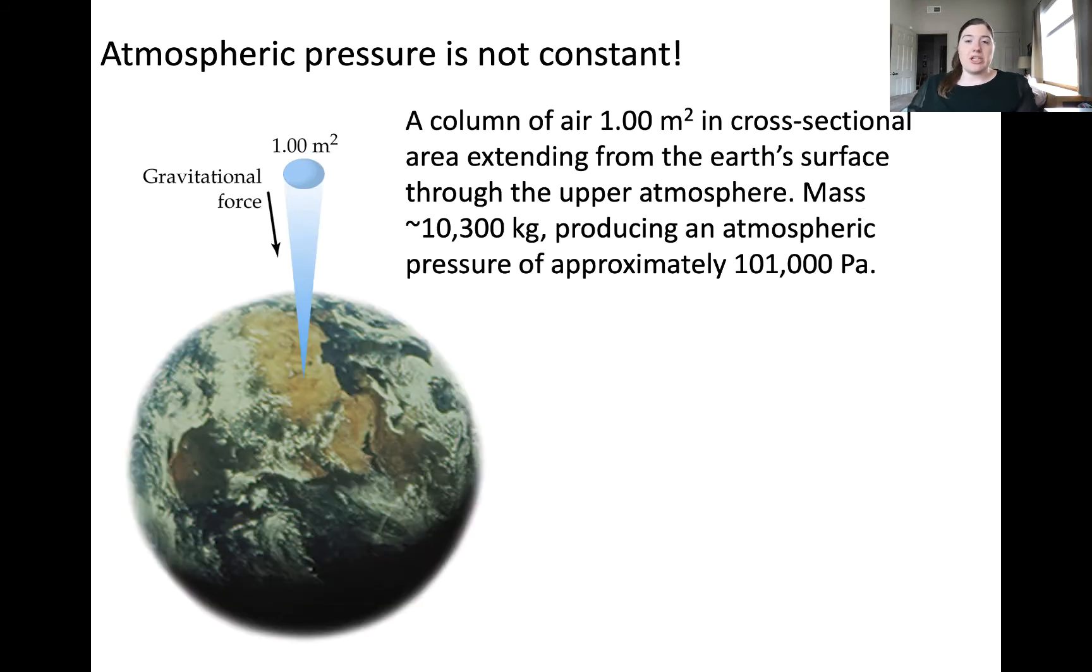One of the units of pressure we'll use in this class is referred to as the atmosphere, ATM. The origin of this unit comes from measuring the mass of a column of air extending above the Earth's surface into the upper atmosphere. The force this column of air exerts on the Earth's surface is approximately 101,000 Pascal. This is an approximate value and is not constant.